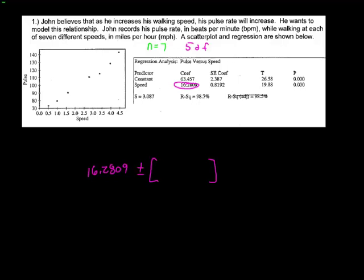I'm going to invert T. Let's do a 95% confidence, 95% confident level. So that's going to be 0.025, that's the tail probability, comma 5 degrees of freedom. And I get 2.571 times my standard error.